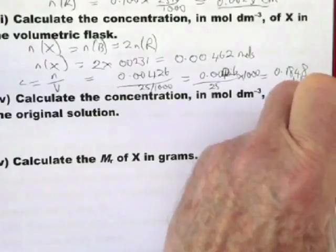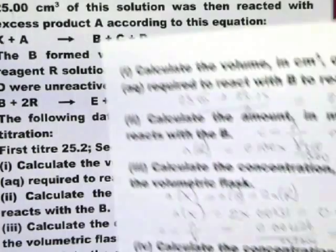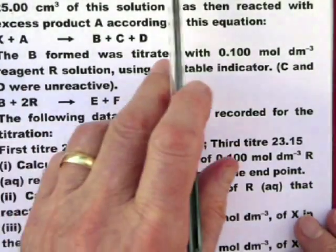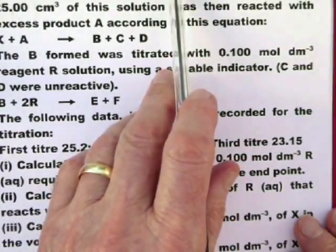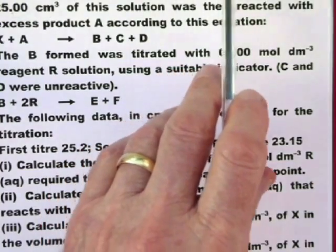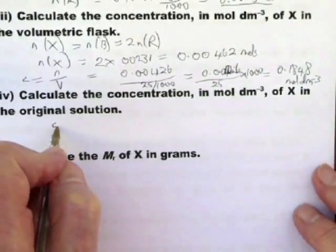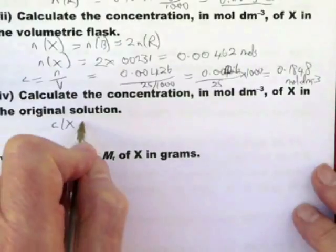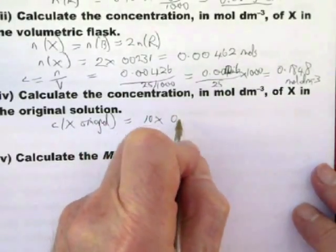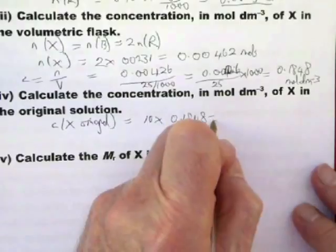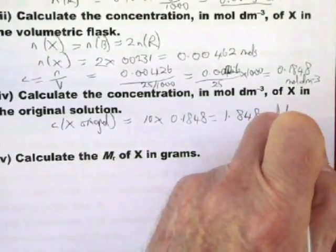Now calculate the concentration of X in the original solution. Now this is where people get a little bit confused, but it's not that difficult. The solution of X was diluted, that's the original solution was diluted by adding 25 cm cubed to 250. So it's diluted 10 times. So the original solution is 10 times more concentrated than the stuff in the volumetric flask. So all we do is this concentration CX original equals 10 times 0.1848 equals 1.848 mole decimetre minus 3.